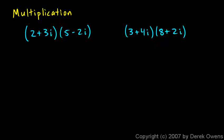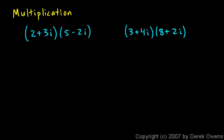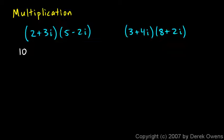Here are a couple more multiplication problems. In this first one, (2 plus 3i) times (5 minus 2i). These look like binomials, and even though each is just a single complex number, we can treat them like binomials and multiply using the FOIL technique — first, outer, inner, last. The first terms: 2 times 5 gives 10. The outer terms: 2 times negative 2i gives negative 4i.